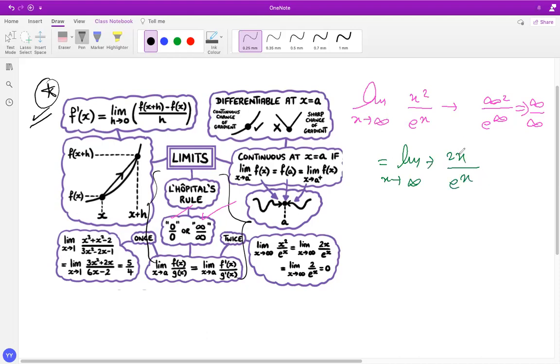Now, once again, I plug in, I notice that my expression is still in that format, infinity over infinity, because 2 times infinity is infinity, and e to the power infinity is infinity.